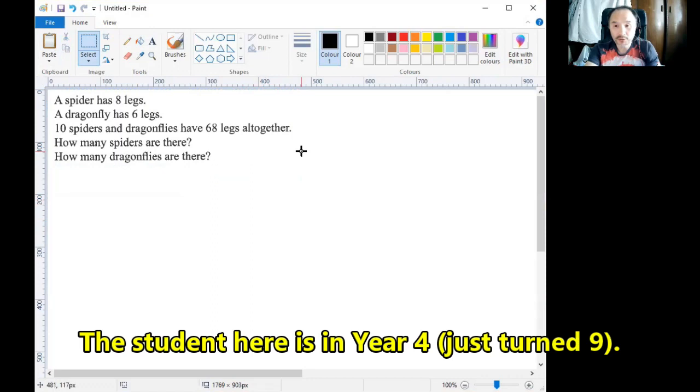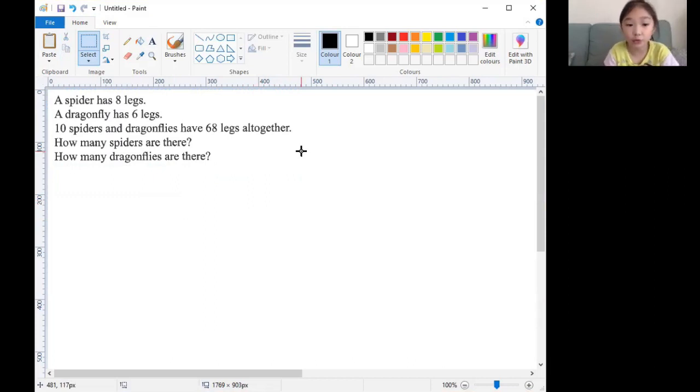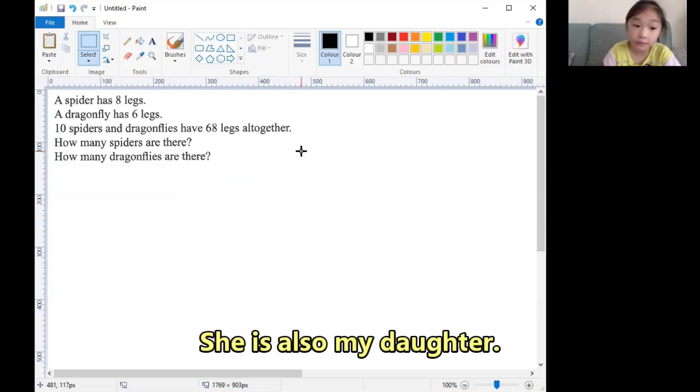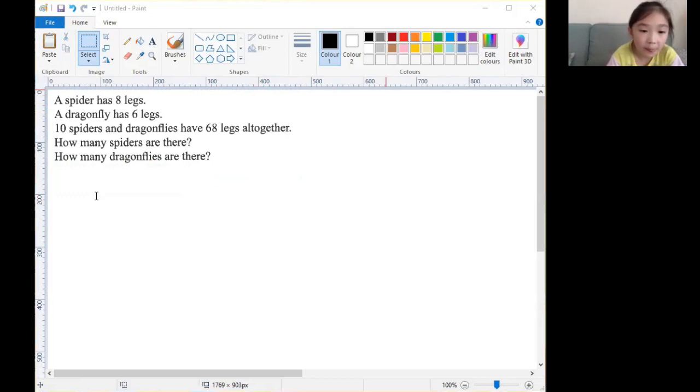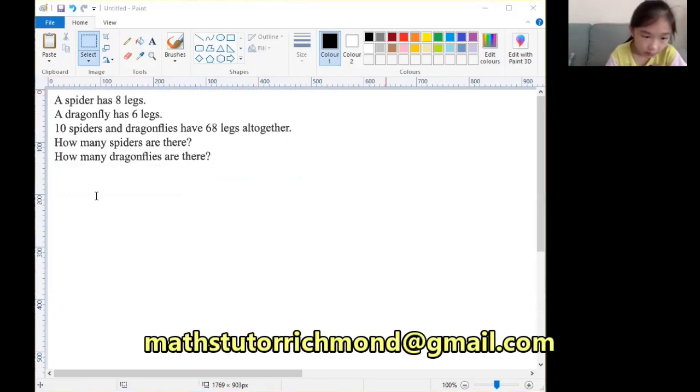So what's going on with this question? A spider has eight legs, a dragonfly has six legs. Ten spiders and dragonflies have 68 legs altogether. How many spiders are there? How many dragonflies are there?